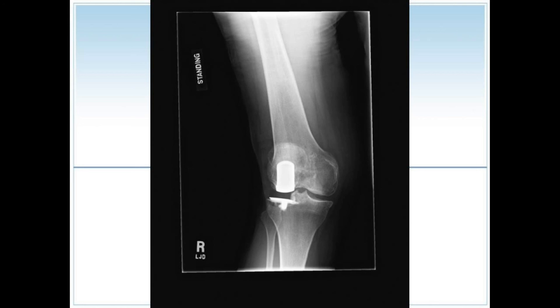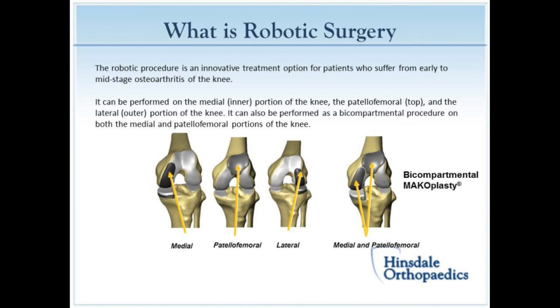Partial knee replacement can also be done on the outside, or lateral side, of the knee. At Silver Cross, we now have a new system for partial knee replacements called the Mako system, or Makoplasty — it's actually a robotic system. It's another way for us to prepare the bone to accept the implants. I've actually been doing it at another facility since 2010, so it has a good track record, and we're excited about it here at Silver Cross.